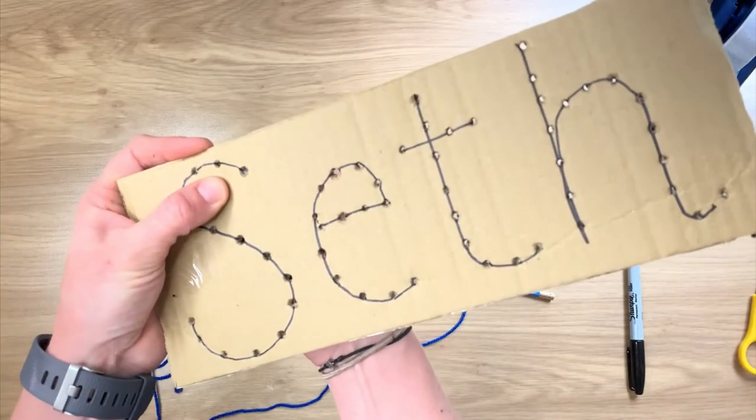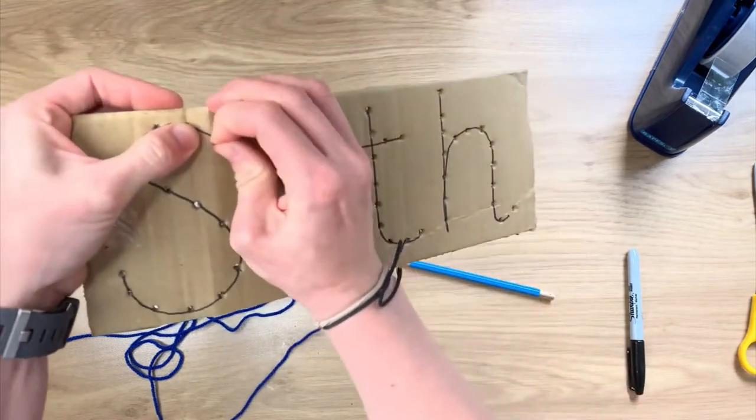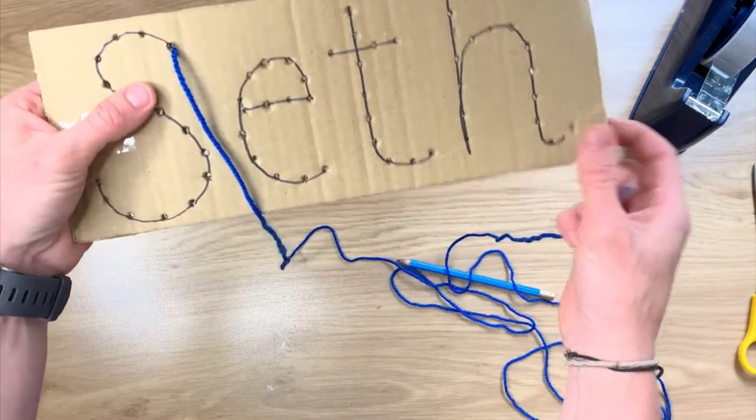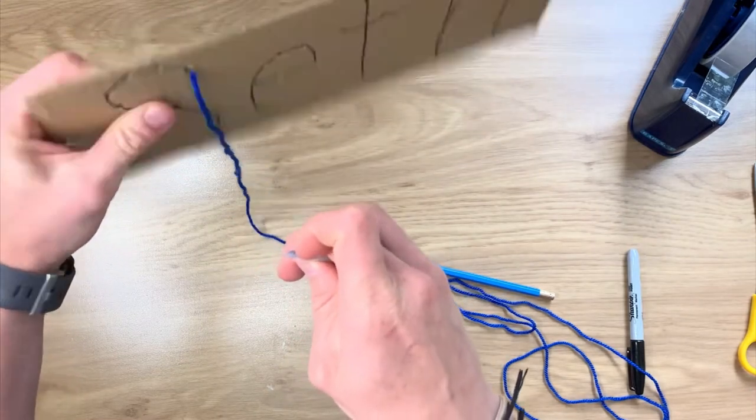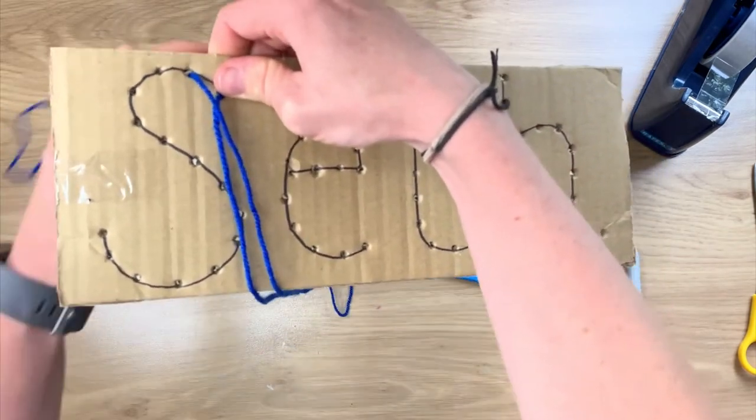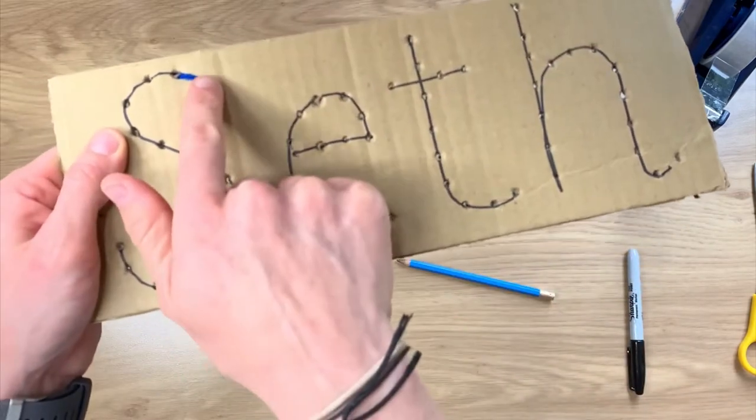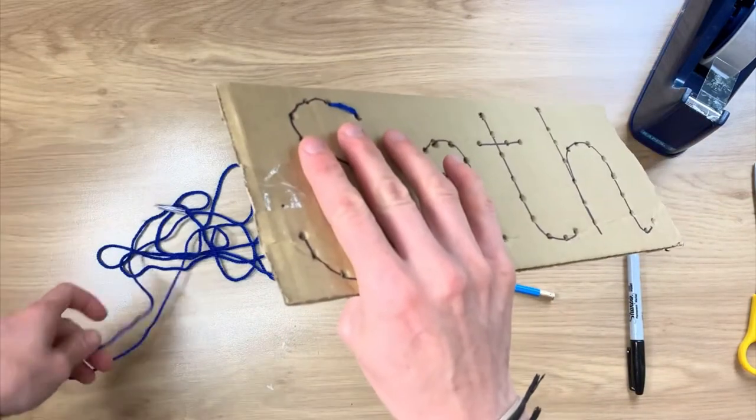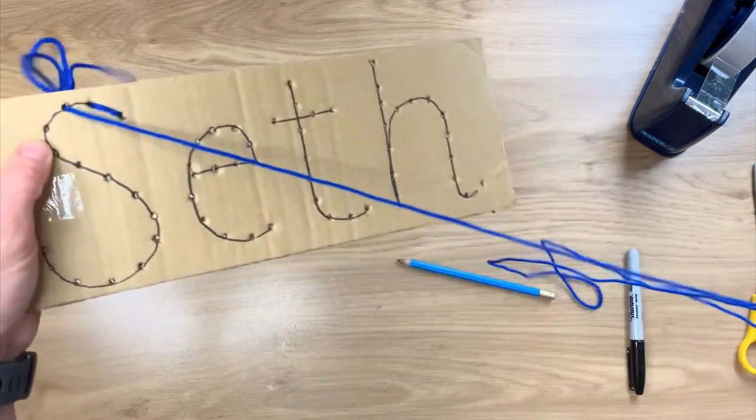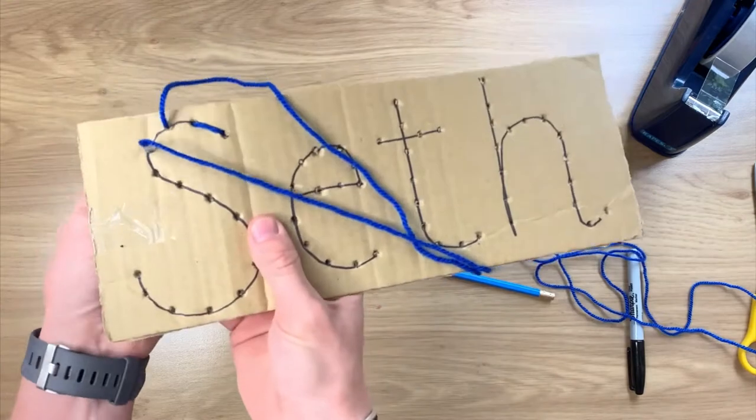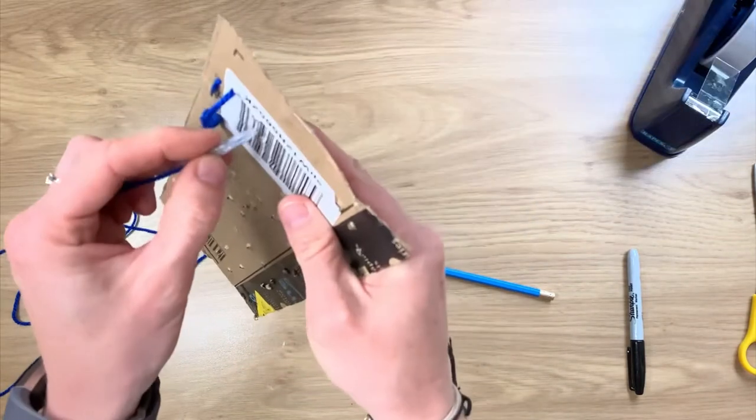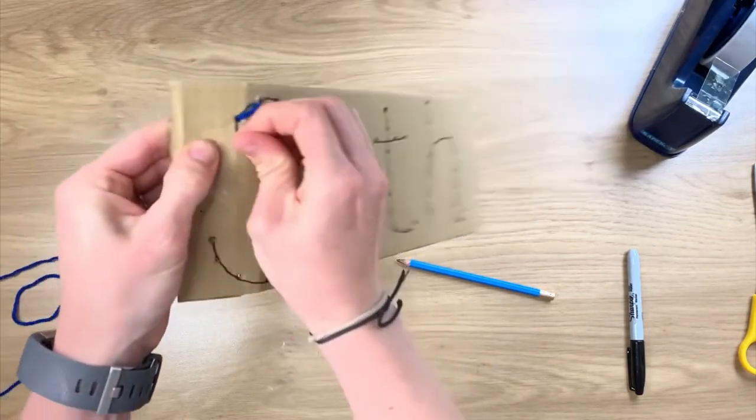So start at the first letter and you want to get them to push it in from the back so that when they pull it all the way through, this is probably a bit long, the knot will be at the back so you won't see it. And then just get them to find the next hole and push the needle through and keep pulling all the string through and you'll get your first stitch. And then find the next hole and you're coming back up through that one, and then find the next one and you go back down through it. So you're going up and down, up and down, up and down, and you'll start to see that the wool is making the letter for you.